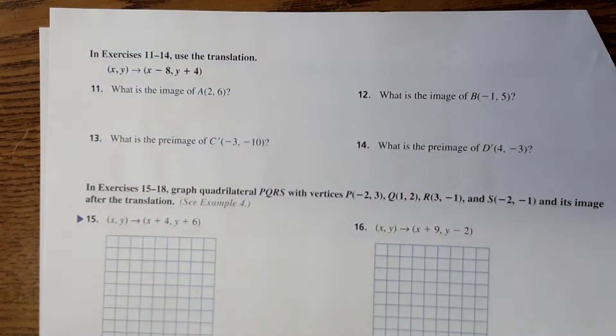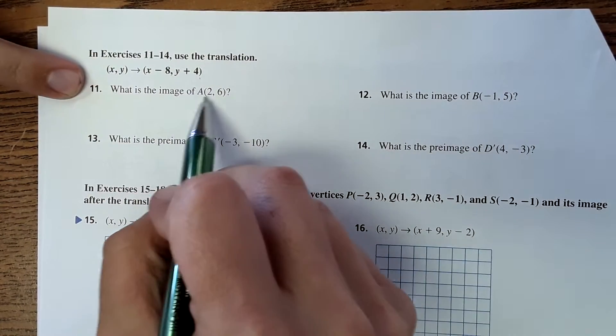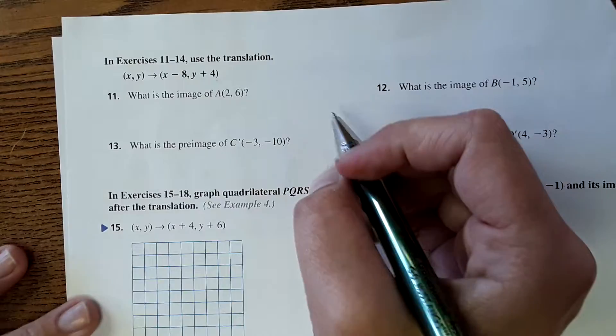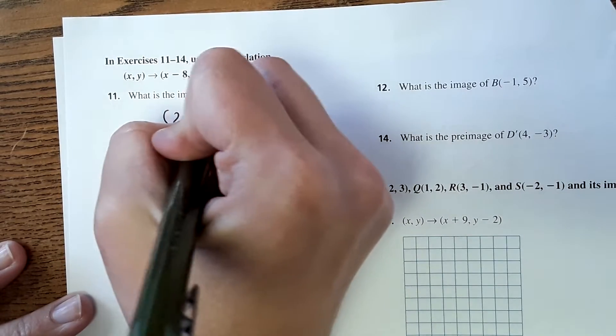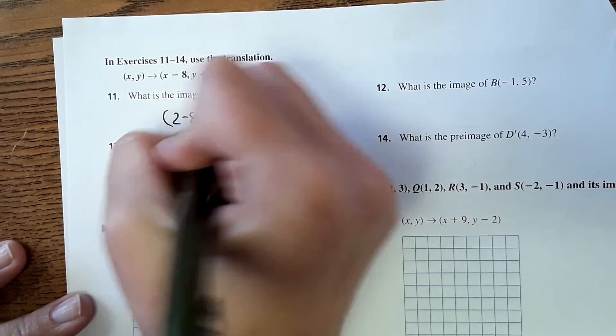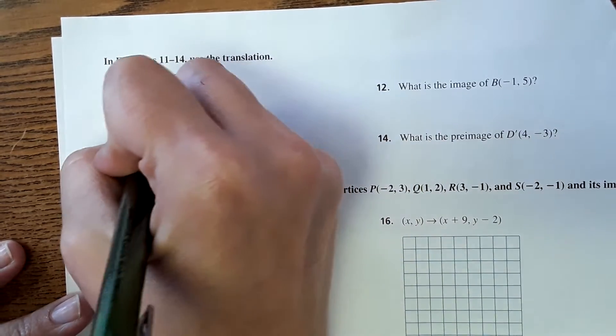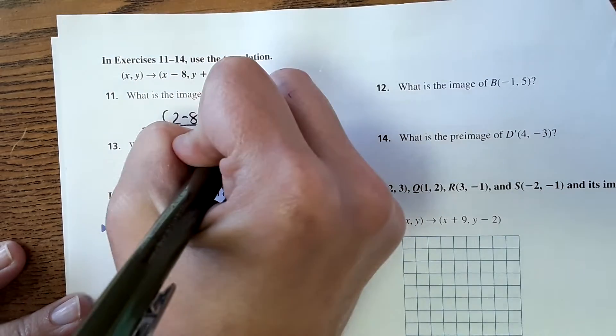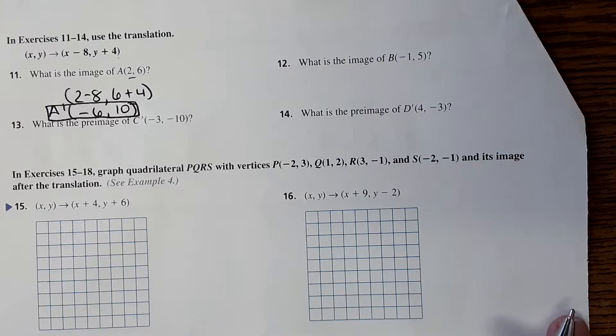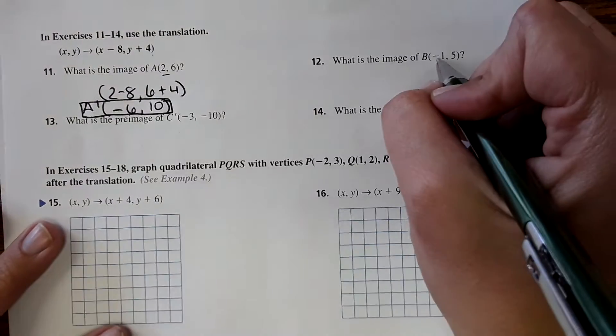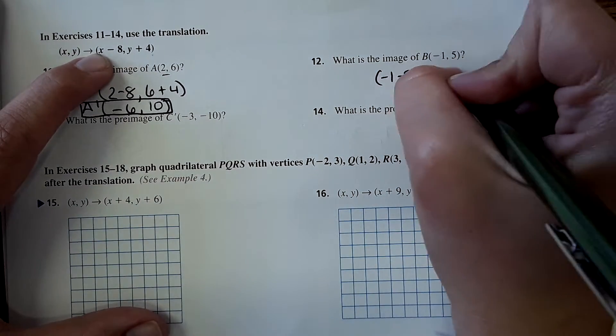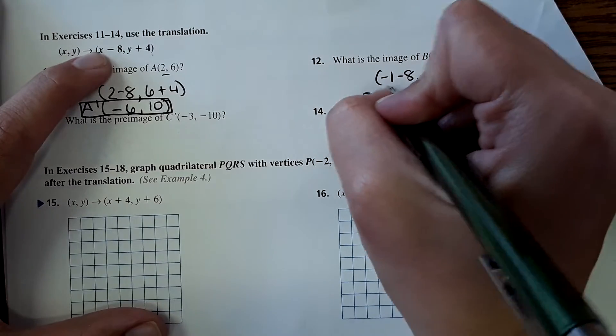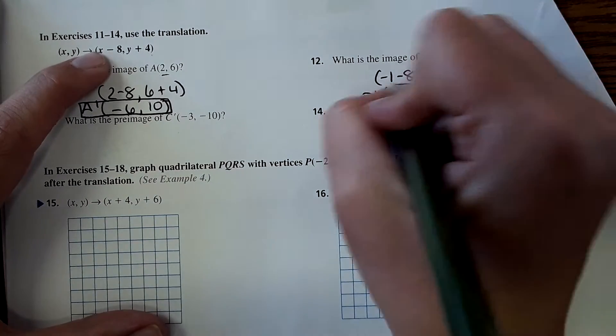Looking at the top and what kind of questions we have there. It says use this translation. So here's our rule. What is the image of A 2, 6? So we're going to take this and actually plug it into the rule here. So it would become 2 minus 8 and 6 plus 4. So that would be negative 6, 10. So A prime is negative 6, 10. And that is our answer. And then for number 12, what is the image of B negative 1, 5? Again, just plugging it into the rule. And B prime would be negative 9, 9. And that's it.